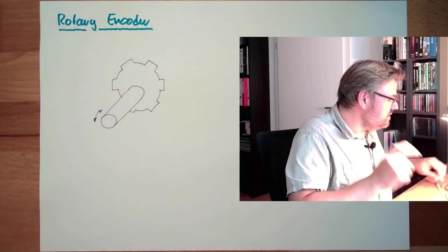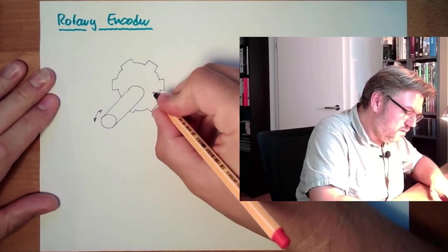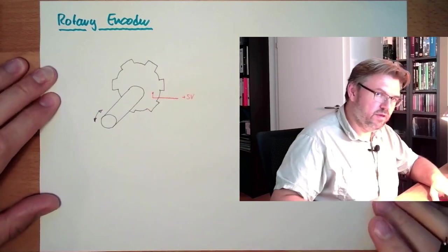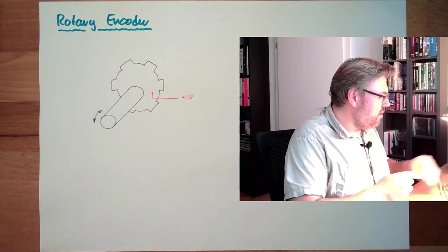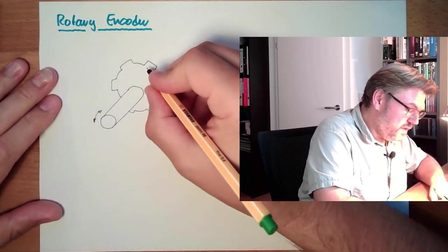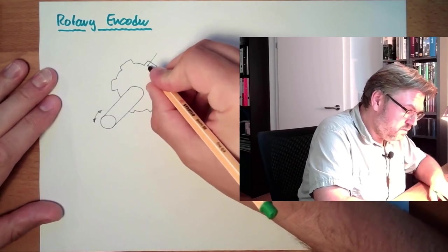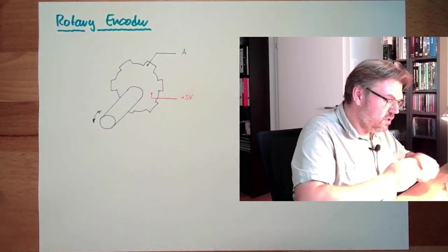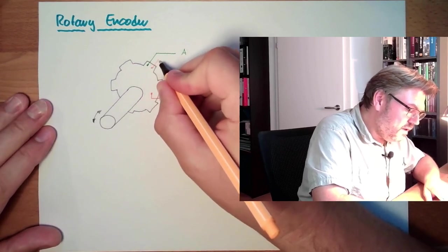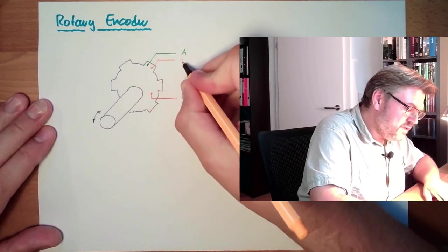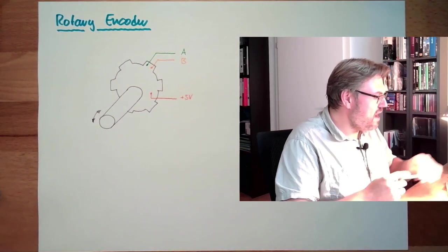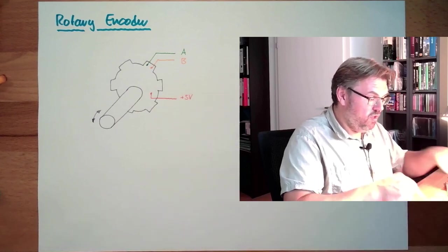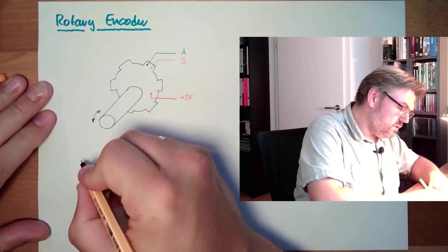So this tooth disc is connected here to plus 5V. This is how you can think about it. Plus 5V. Then we do have two other connections. There is one connection connected here. This is called A. And then there is another connection connected slightly at a different position. This is B. If we are in that position, right? Both display 5V.